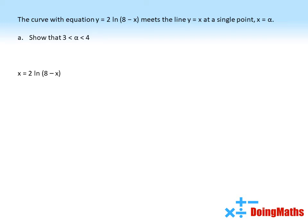We've got that y = 2 ln(8 - x) and y = x. We can set those two right-hand sides equal to each other, so x = 2 ln(8 - x). Subtracting x from both sides gives us 0 = 2 ln(8 - x) - x.